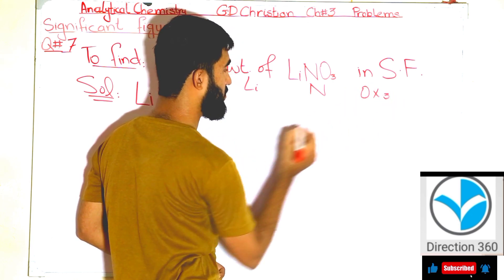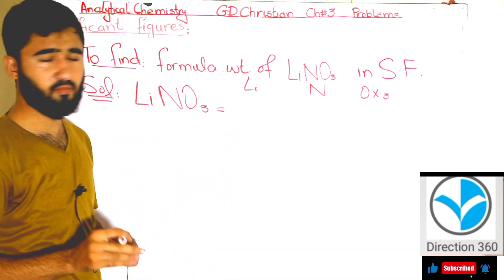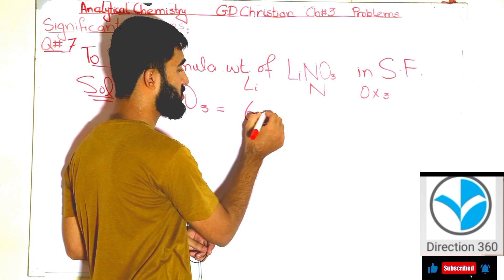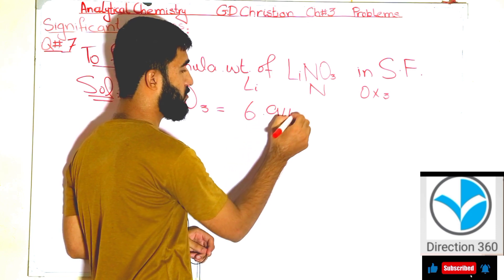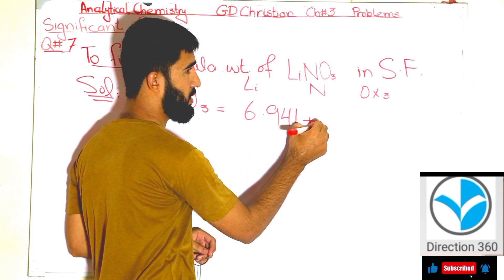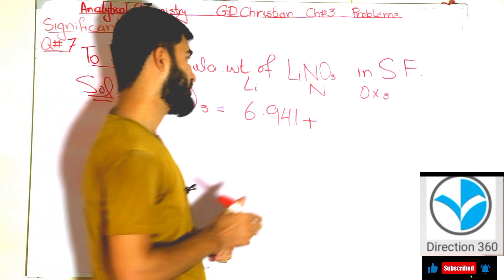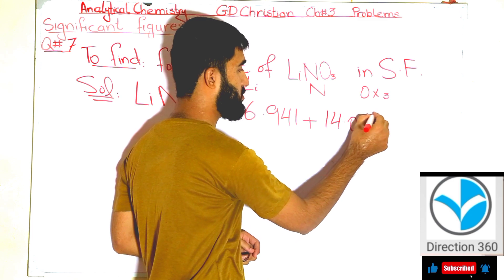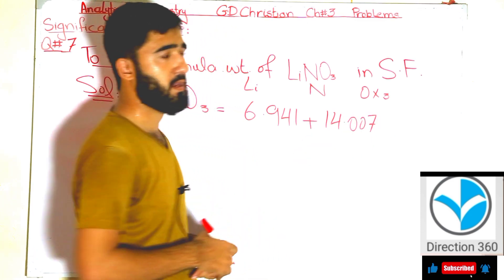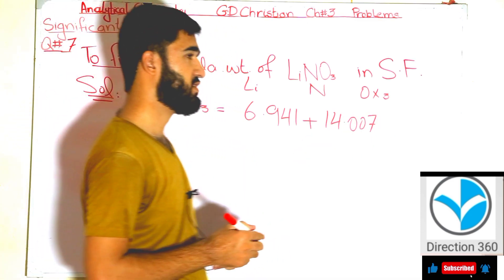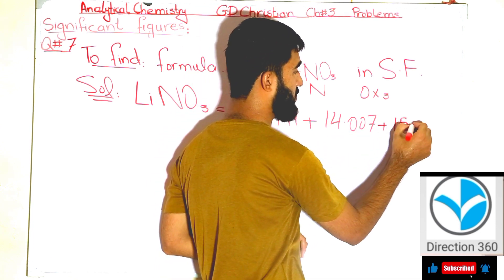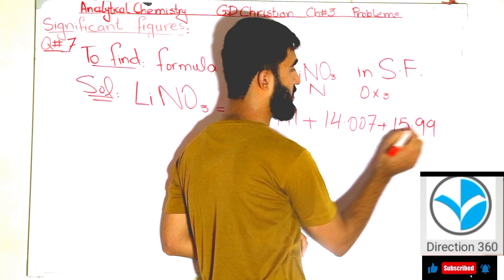solve this. We have to put the values: lithium is equal to 6.941, nitrogen is equal to 14.007, and oxygen is equal to 15.99. We have three oxygens, so multiply by 3.